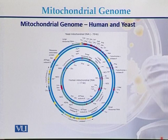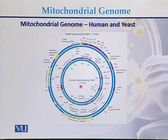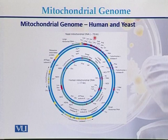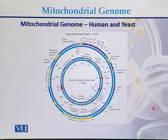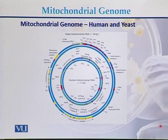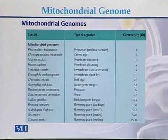This diagram shows a comparison between the human mitochondrial genome and the yeast mitochondrial genome. The inner circle represents the human mitochondrial genome at approximately 16.5 to 17 Kb, while the outer circle represents the yeast mitochondrial genome at approximately 78 Kb. This comparison illustrates the significant size difference between the mitochondrial genomes of these two species.